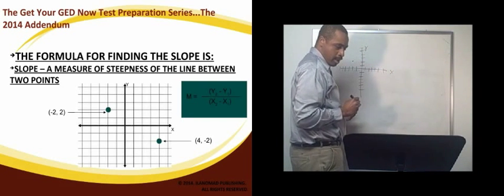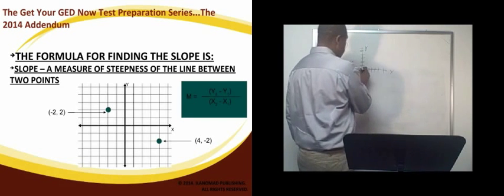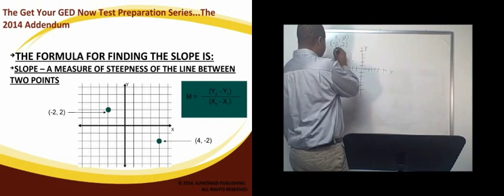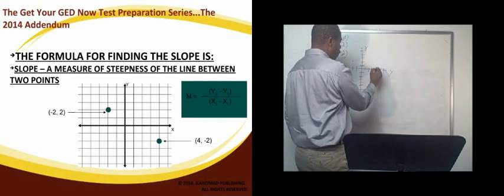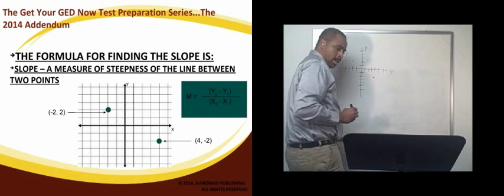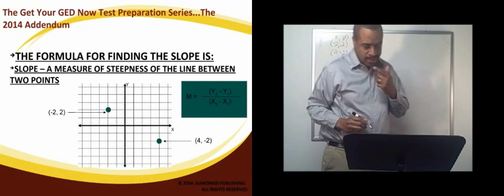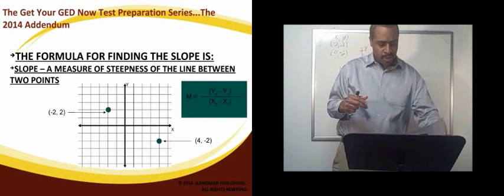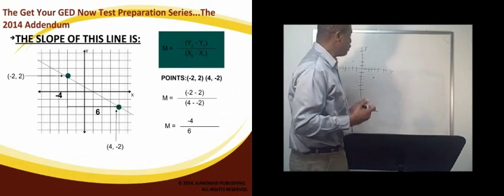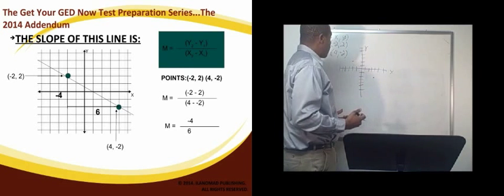And then the second point is 4, negative 2. So we're going to come over here on positive x, 1, 2, 3, 4, and down 1, 2 on the negative y, and we have our two points. And so now, the question that you could face on the GED test will be you need to find the slope of this line.